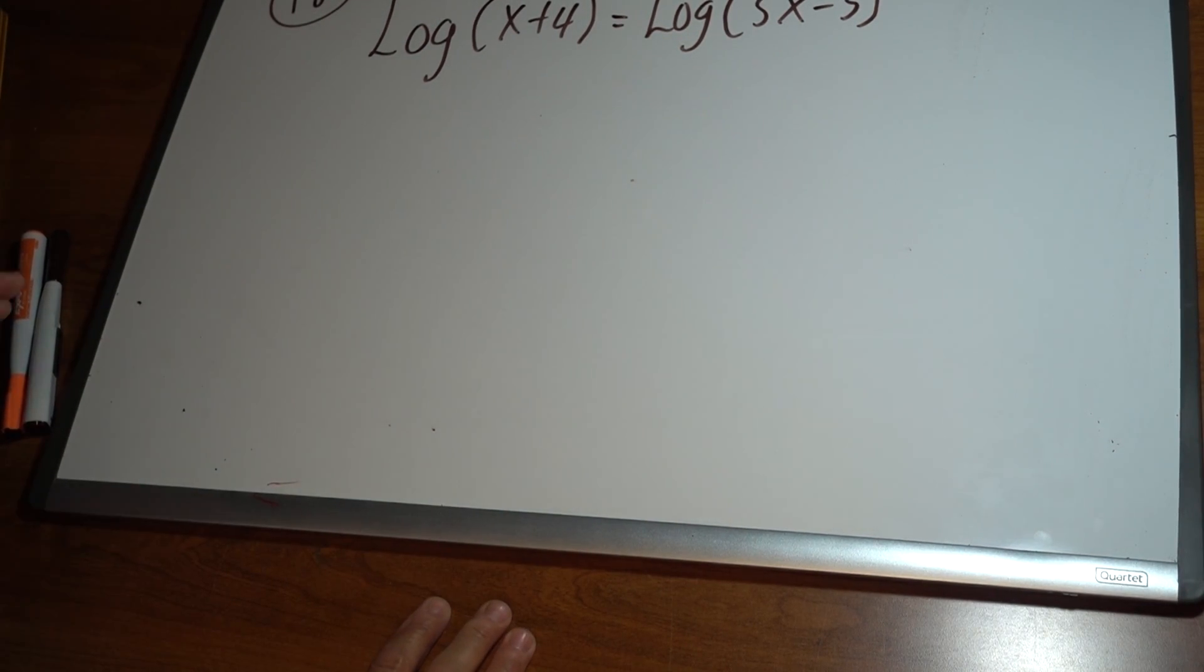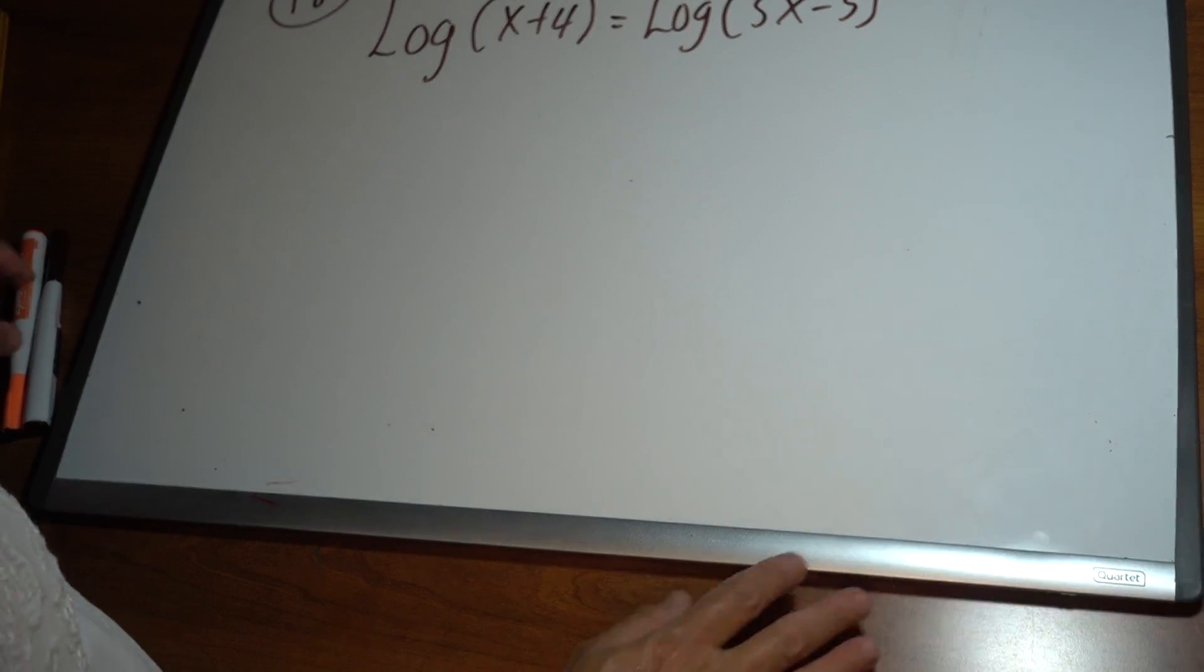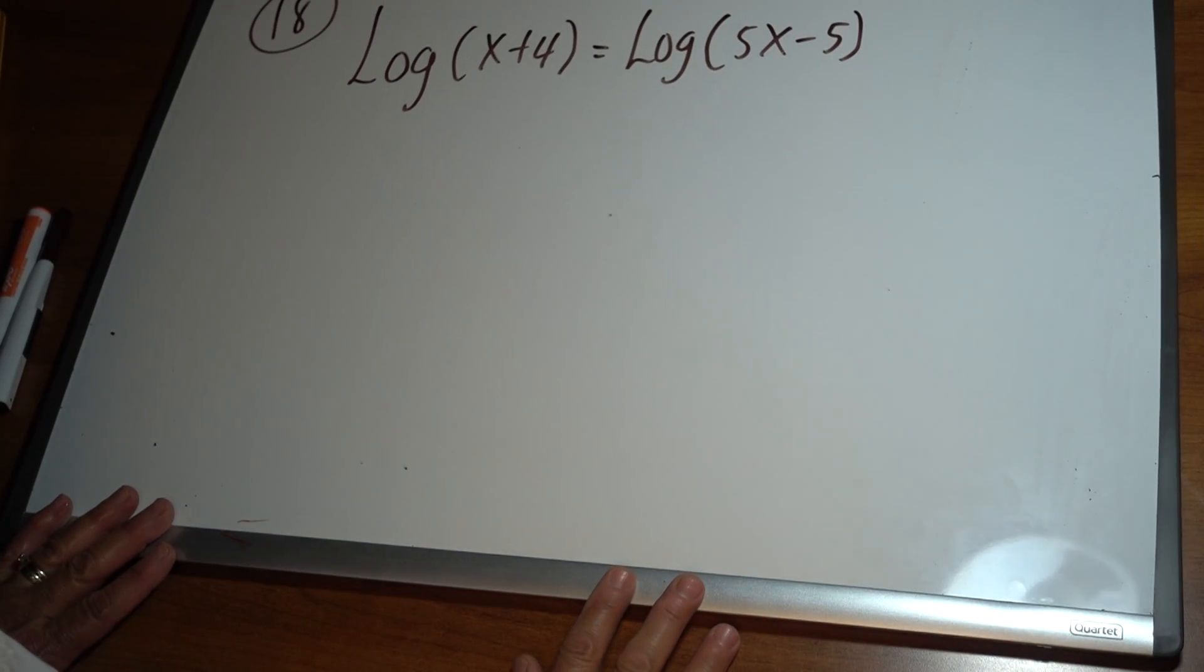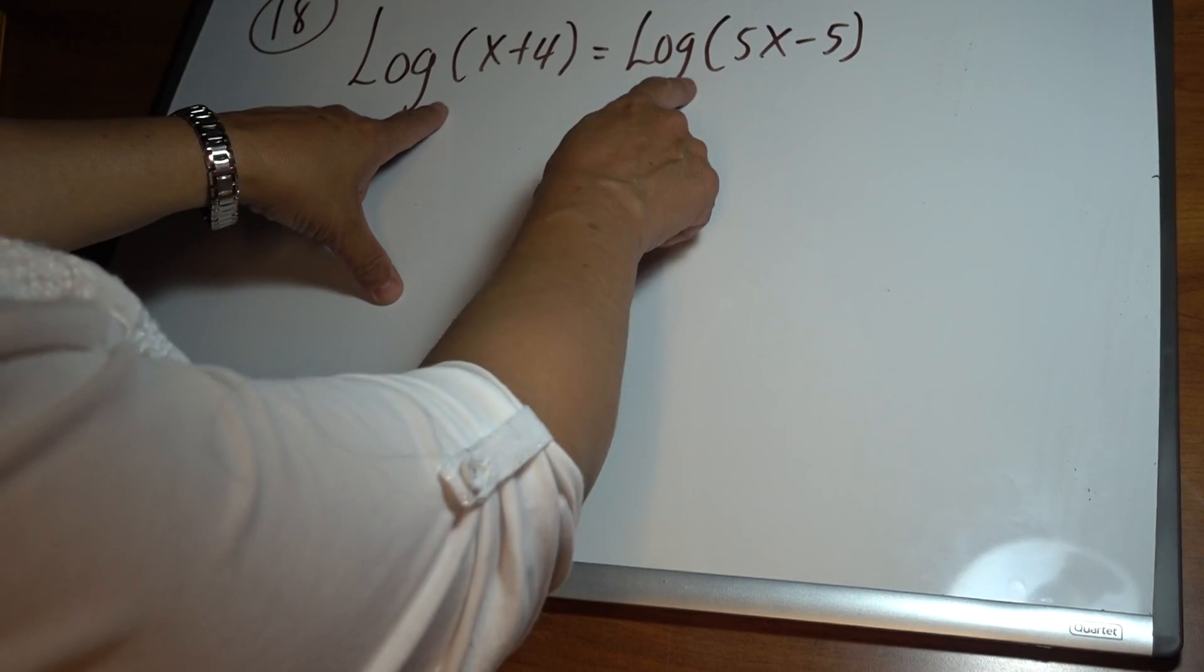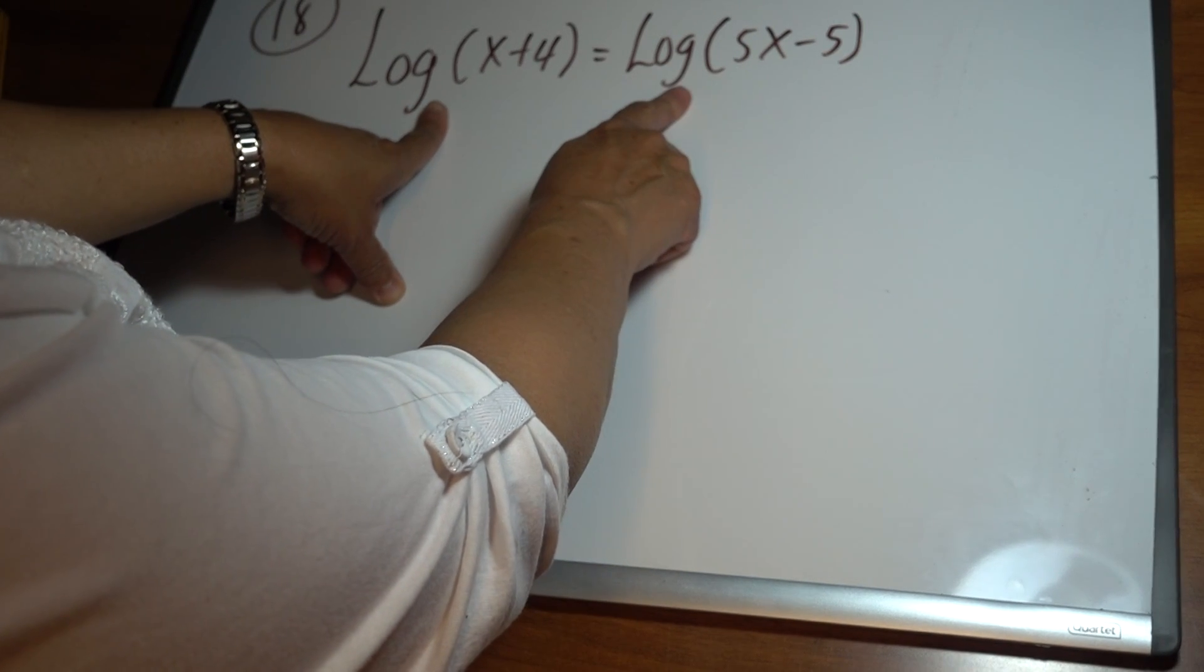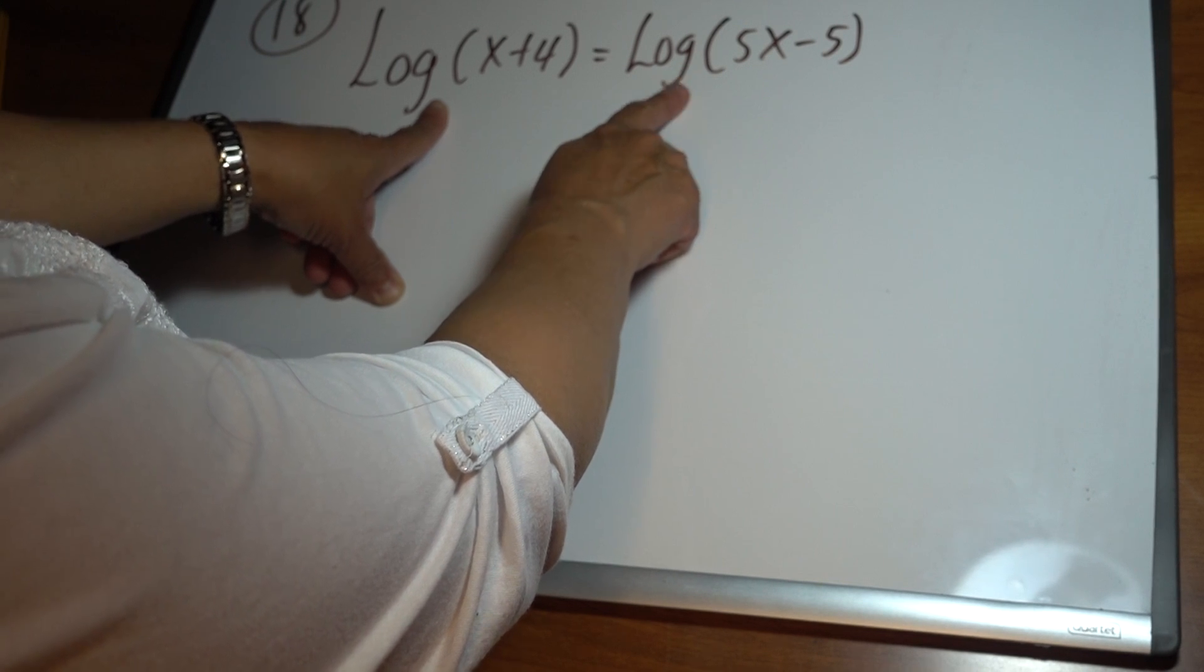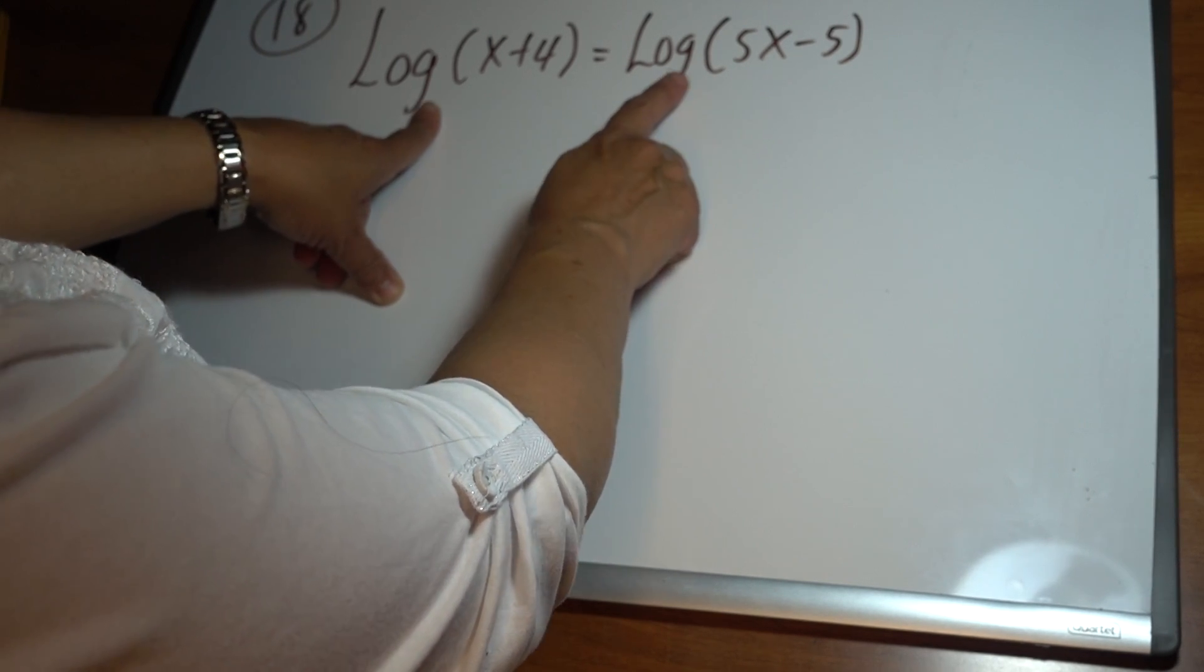Problem number 18: we have a logarithmic equation. This is log base 10. When you have any base, we're assuming this is 10, so this is the common log. Log of x plus 4 equals log of 5x minus 5.